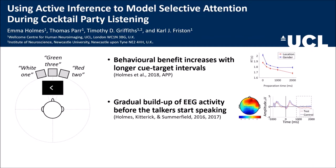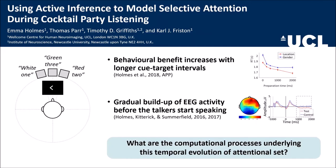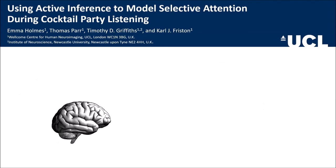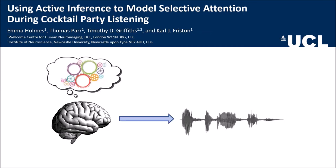We wanted to know what the computational processes underlying these effects are. We modelled this using active inference, which is an extension of predictive coding based on the idea that our brains actively predict the speech signal based on an underlying generative model. We developed a new generative model of selective attention during cocktail party listening, treating it as a Bayesian inference problem.